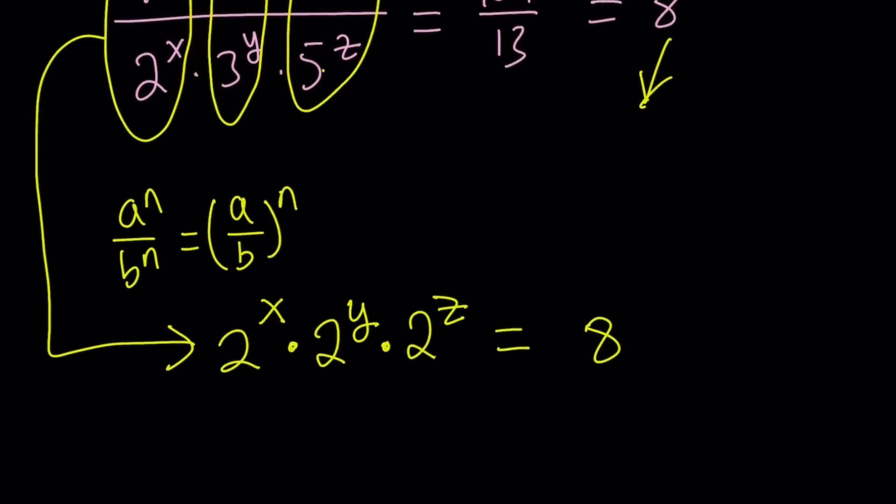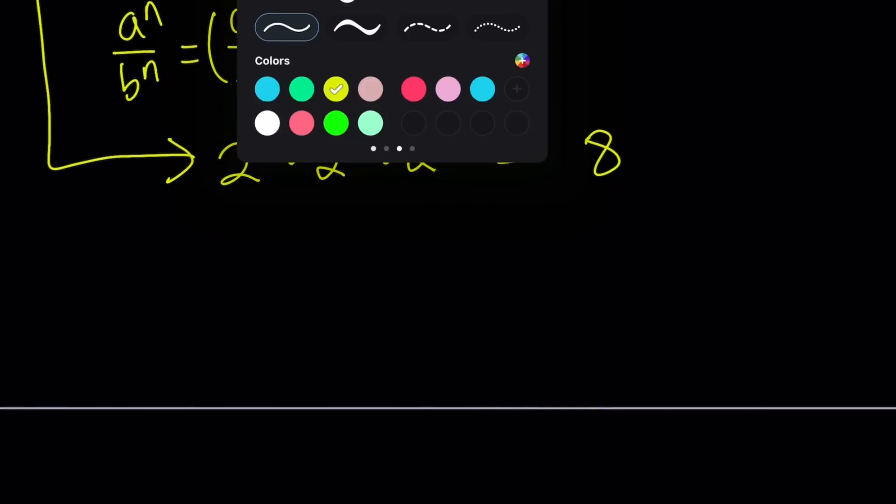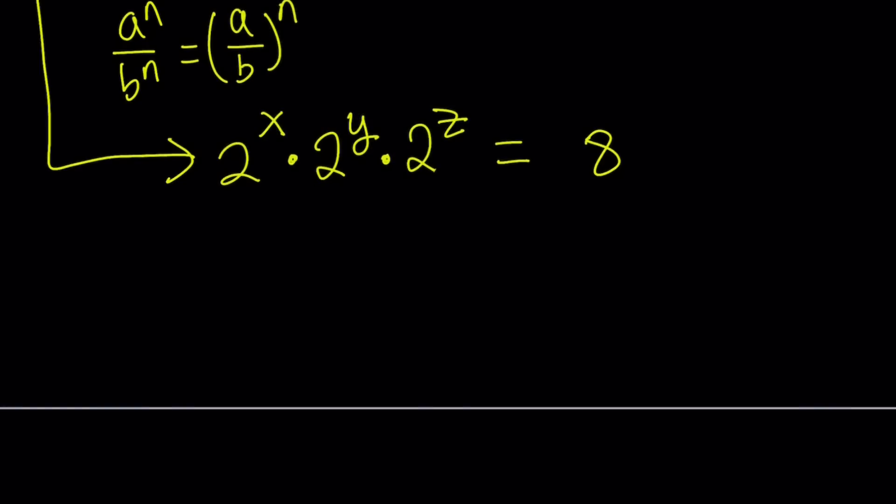So now, we have that ability since we have the same base. So let's go ahead and add the exponents. 2 to the power x plus y plus z equals 8. And remember, we used a different rule here.